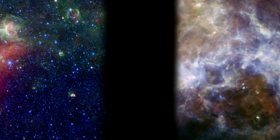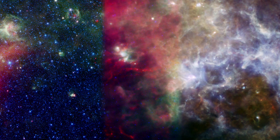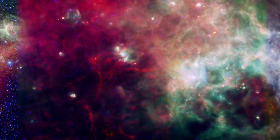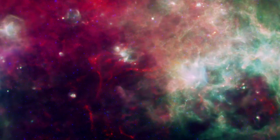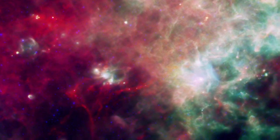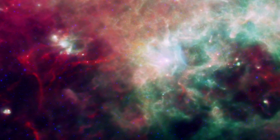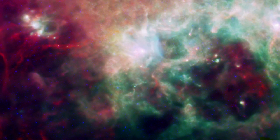The combined Spitzer-Herschel image reveals the full range of cosmic dust temperatures, from the cold and red, to the hot and blue. Together, these two observatories give us the most complete view to date of the infrared universe.